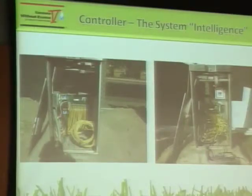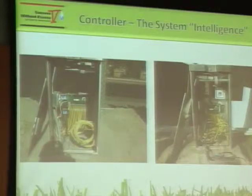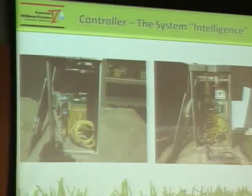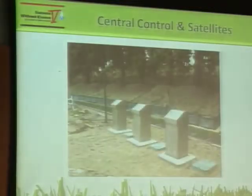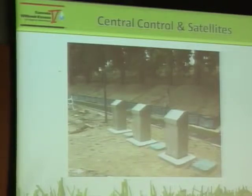Our system is managed by an irrigation controller — it could be a smart controller, a timer, or a central control system. As part of the installation, this is what we would like to see — and you need to have a talk with your contractor if it doesn't look right. You can have a central control or a smart central control system, or individual timers depending on the size of your system. If you're talking about an HOA with 100 acres, you're probably interested in a smart control system managed through a central system.